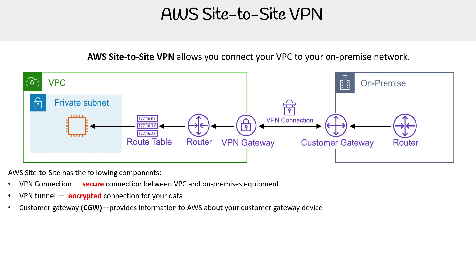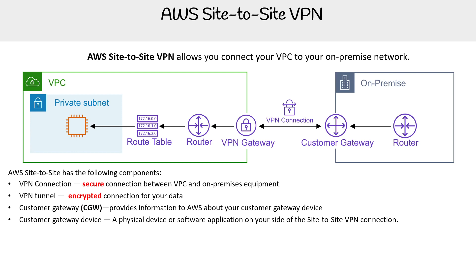We have the customer gateway, the CGW, which provides information to AWS about your customer gateway device. We also have your customer gateway device itself — this is the physical device or software application on your side of the site-to-site VPN connection.